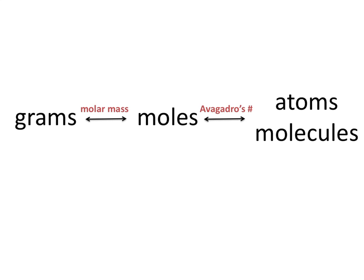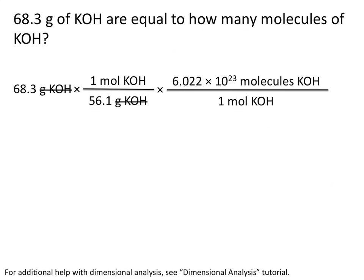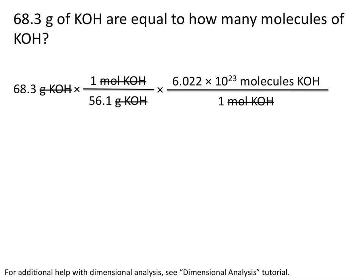Now we can convert from moles to molecules using Avogadro's number. So 1 mole of potassium hydroxide is equal to 6.022 times 10 to the 23rd molecules of potassium hydroxide. Again, we placed moles of potassium hydroxide on the bottom so it will cancel with moles of potassium hydroxide on the top. Remember when writing out these conversions not to confuse moles with molecules — sometimes people start abbreviating molecules as MOL, and that's going to make it harder to keep your units straight in your dimensional analysis problems. We can then cancel out moles of potassium hydroxide and we're left with molecules of potassium hydroxide. So our calculation tells us that 68.3 grams of KOH is equal to 7.33 times 10 to the 23rd molecules of KOH.